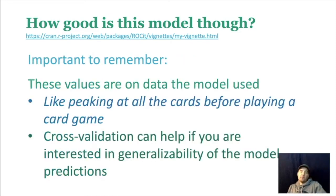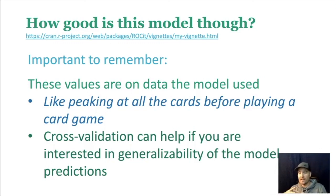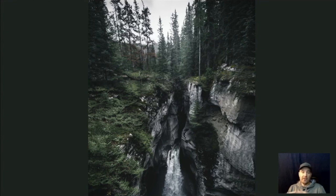One important caveat: these values are on the same data the model used for training, so it's like peeking at all the cards before playing. Cross-validation can help if you're interested in the generalizability of predictions — it's almost always necessary when actual prediction is the goal, and we'll cover it in detail in lecture 17. That's it for this lecture — hopefully you now have a good view of logistic regression, how to interpret it, and how to assess model quality.